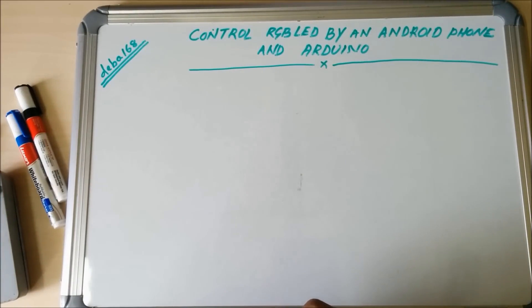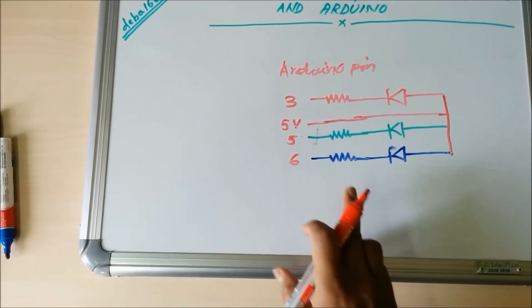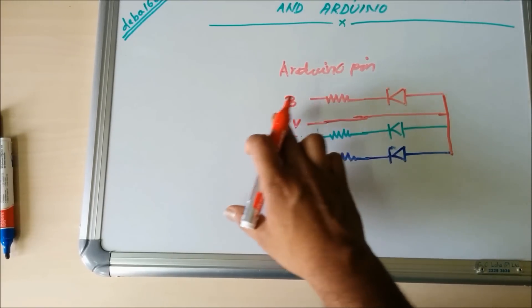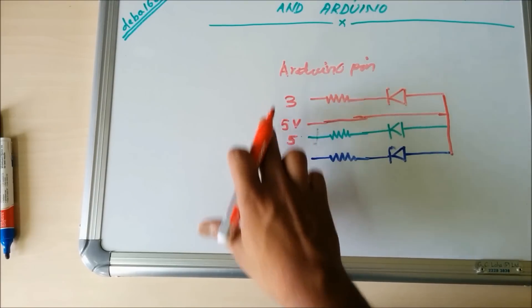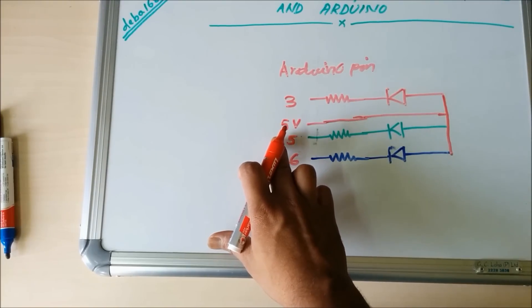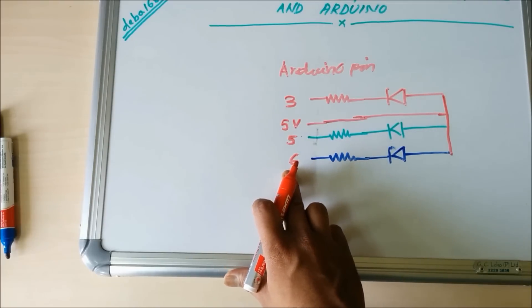On the schematic you can see the red pin is connected to Arduino pin 3 and common anode is connected to VCC or 5 volt. Green pin is connected to pin number 5 and blue pin is connected to pin number 6.